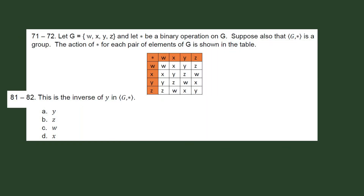Still on the same group — this asks for the inverse of Y in G. We need element A so that A star Y equals the identity element W. It turns out that the inverse of Y in this group is equal to itself, because from our table we can see that Y star Y is equal to W, and W is our identity element. So the answer for this one is letter A.